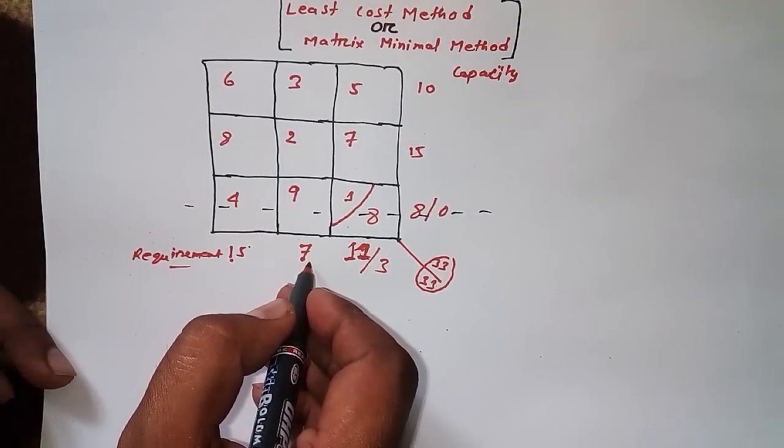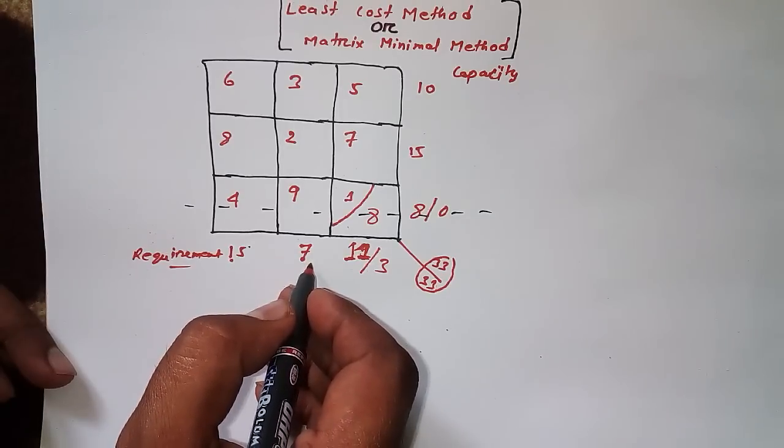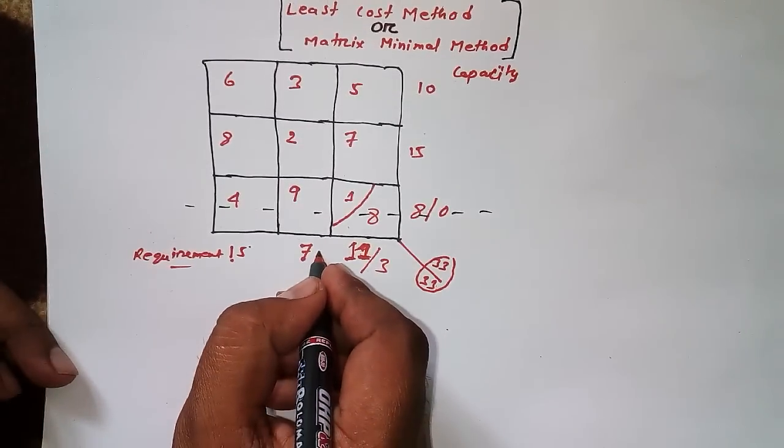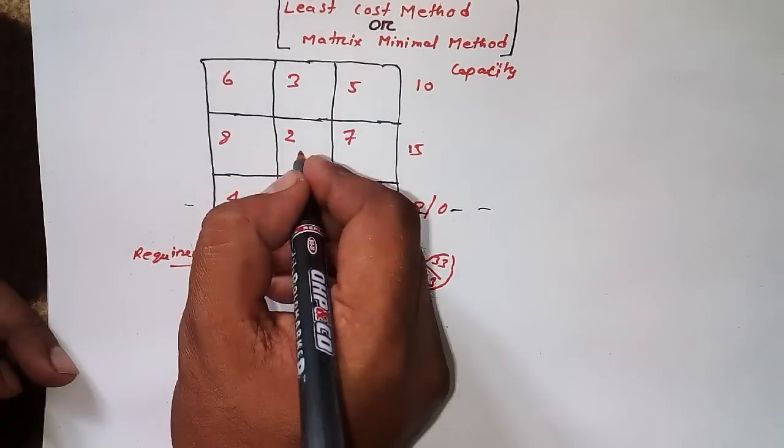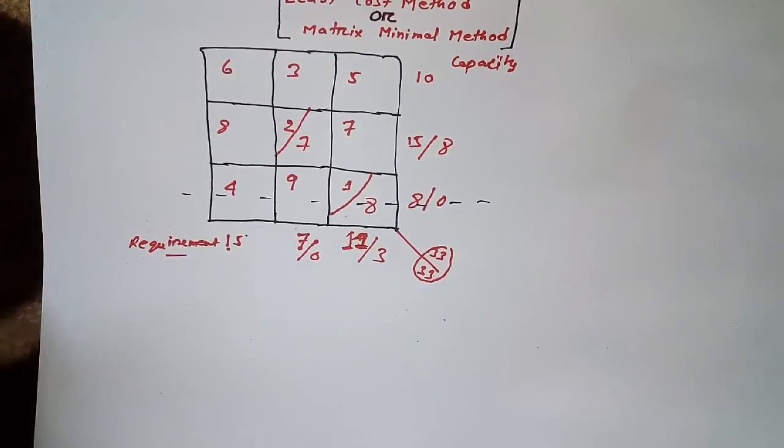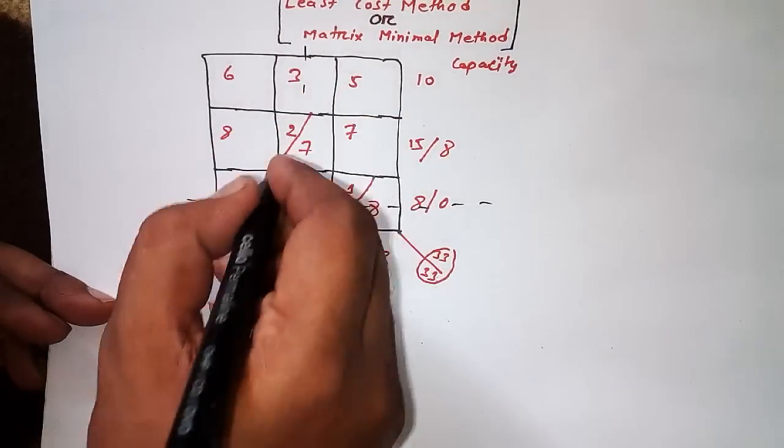Since I'm done with this column, I have four boxes remaining. The minimum is 5, requirement is 3, and capacity is 10. I can fulfill the requirement, so that becomes 0, and here I write 3.